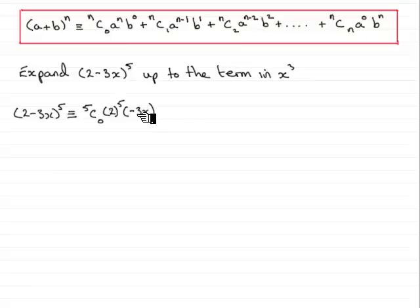Now, that's what you've got to be careful with. Make sure you put this in brackets, okay? The minus 3x. And then, that is to the power of 0. So, that's the first term done.